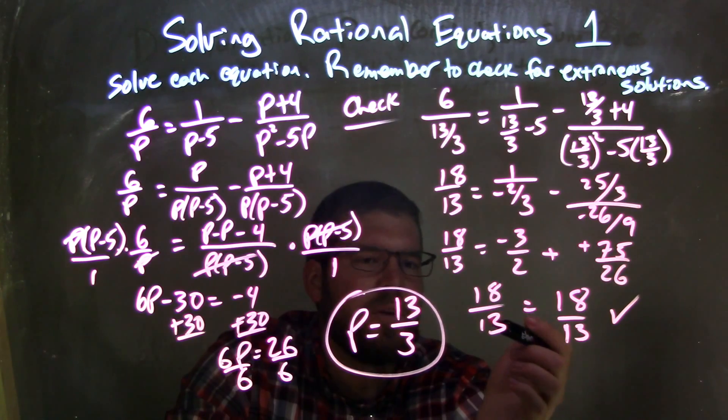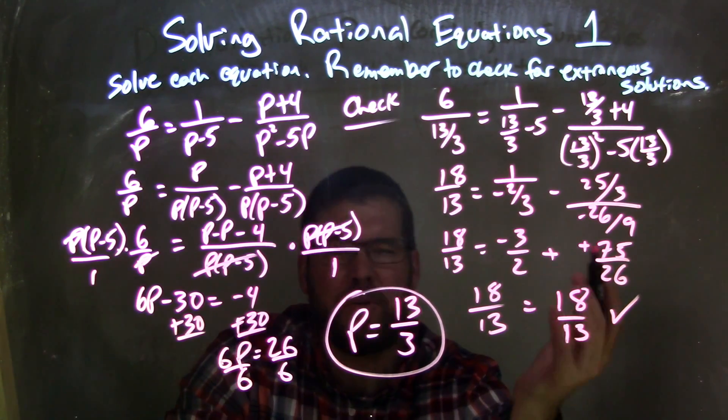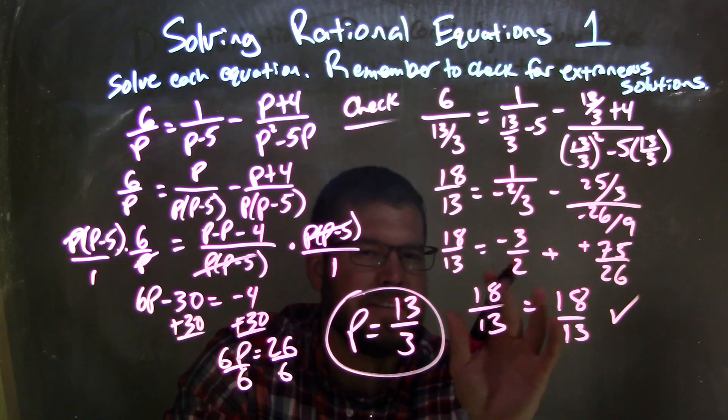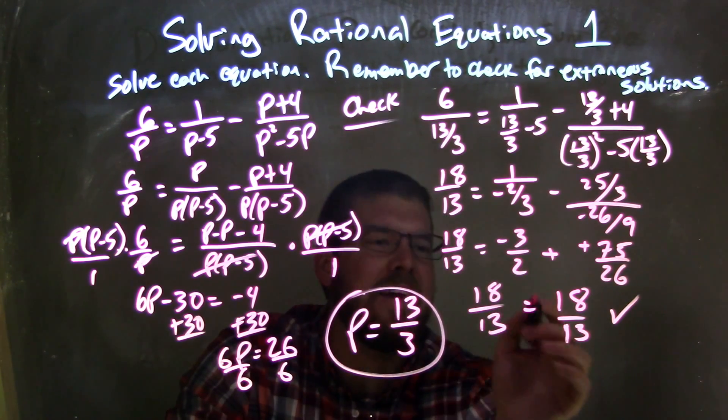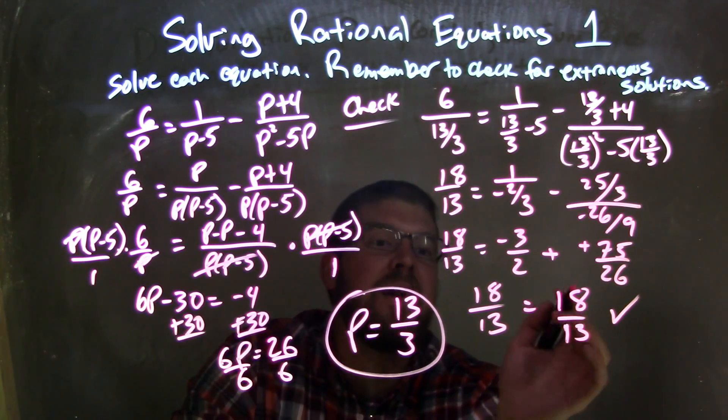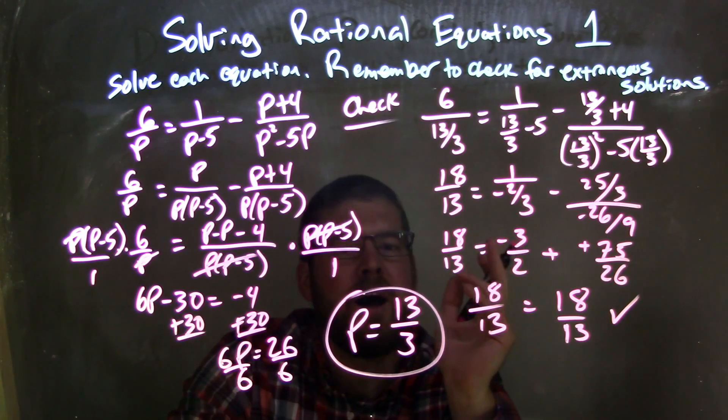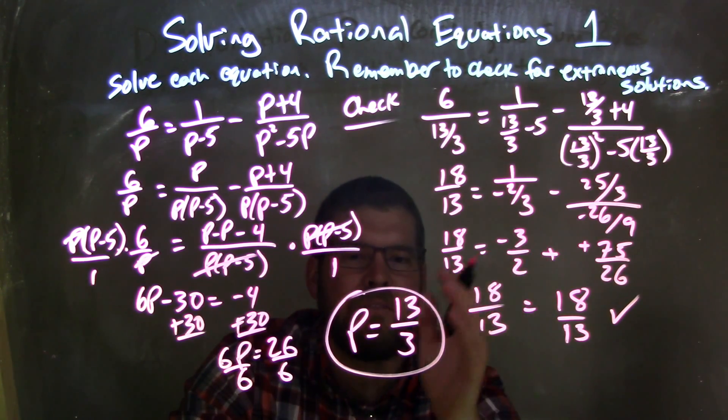Leaving me 18 thirds on the left, 13 on the left, which I probably, I believe I said 18 thirds a lot, but it's 18 over 13 right there, is equal to 18 over 13 on the right. They are equal, confirming that our answer is not extraneous, and the final answer is p equals 13 over 3.